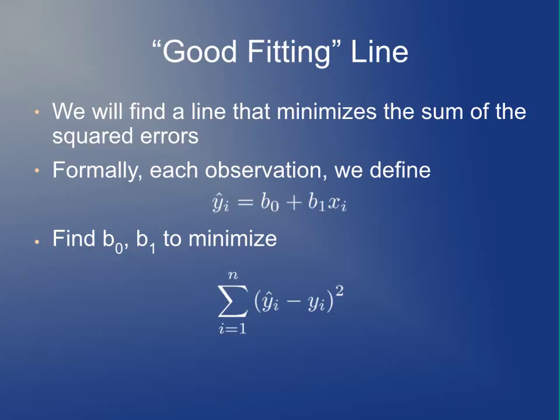We find a line such that ŷ_i — the approximation for y for the i-th observation — is equal to b₀ plus b₁ times x_i. We choose b₀ and b₁ to minimize the sum of squared errors, which is the sum of (ŷ_i minus y_i) squared, and try to get that as small as possible.